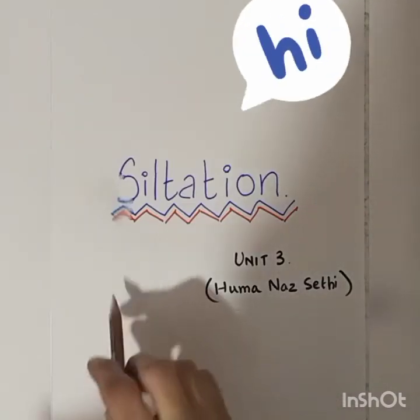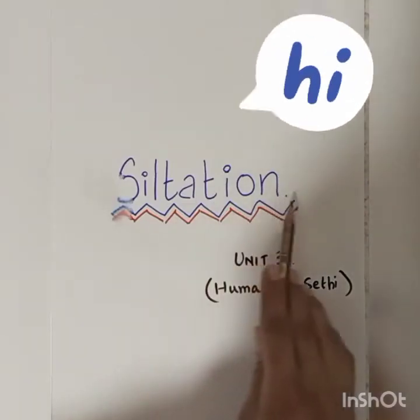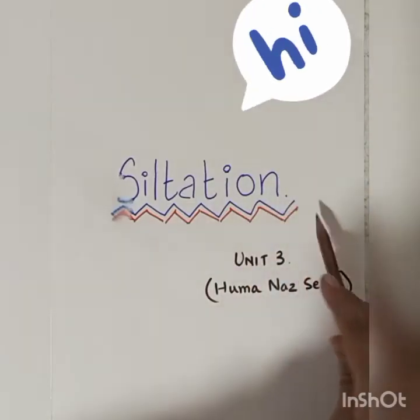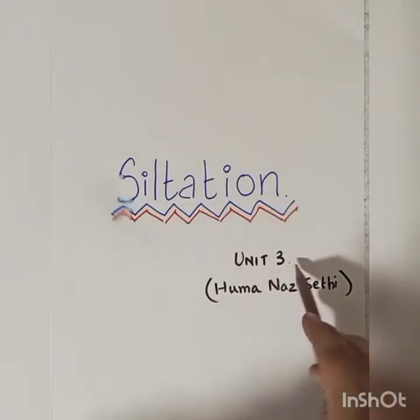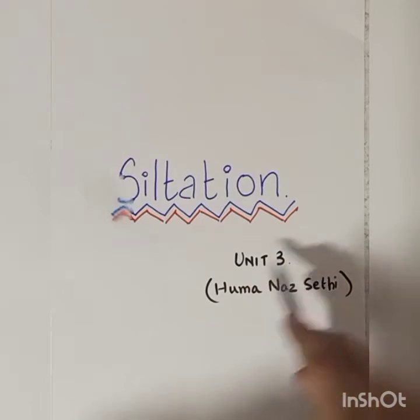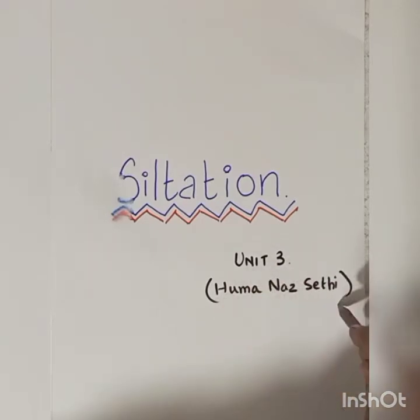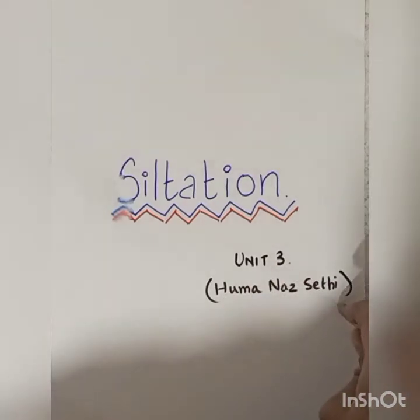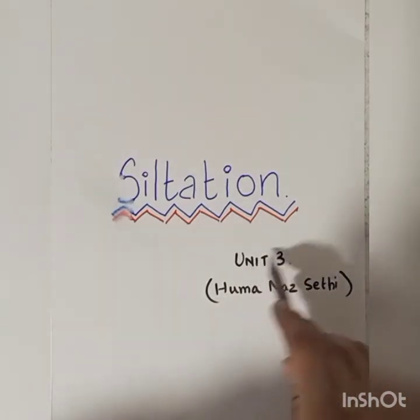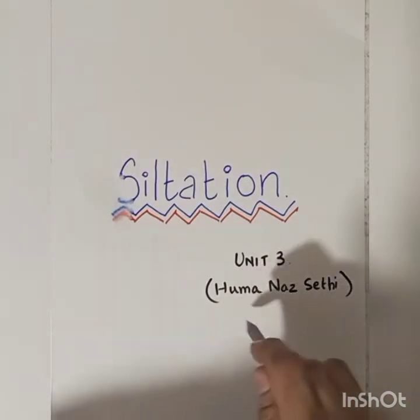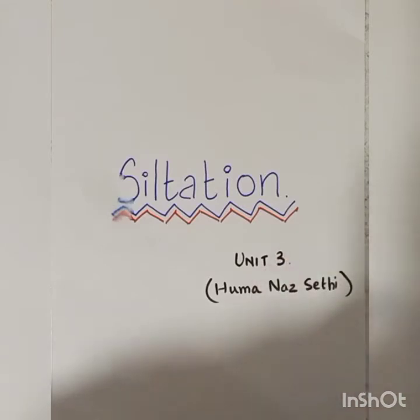Hello friends, today we'll be talking about siltation. Siltation is a topic of Unit 3 of your textbook, Homanas Seti, which is the environment of Pakistan. Unit 3 is the development of water resources.